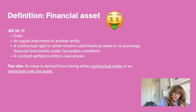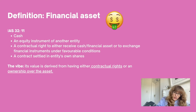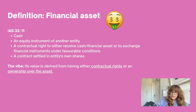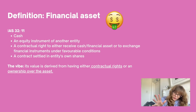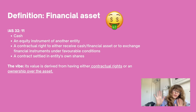The definition is found in IAS 32 paragraph 11 and it is: being cash; an equity instrument of another entity; a contractual right to either receive cash or another asset, or to exchange financial instruments under favorable conditions; and lastly a contract settled in the entity's own shares. That last point has conditions attached to it — to do with non-derivatives and derivatives — but basically the idea of a financial asset is that you have some sort of contractual rights or ownership attached to this asset.